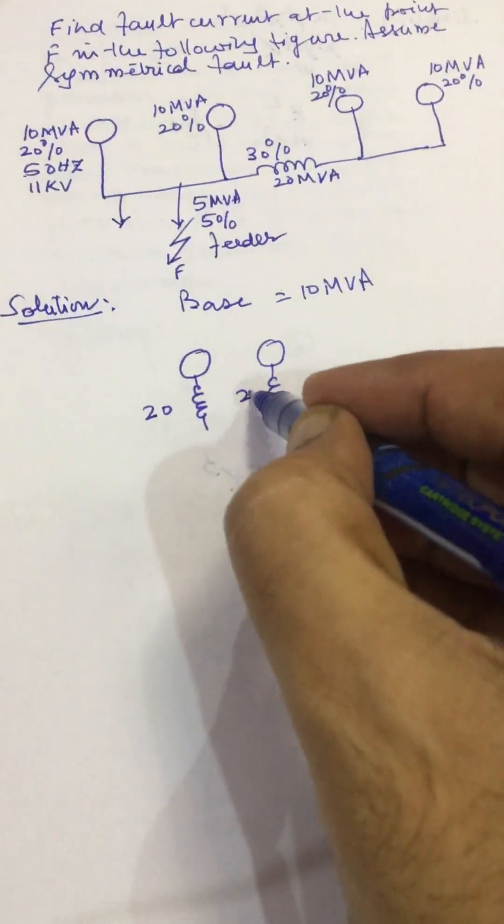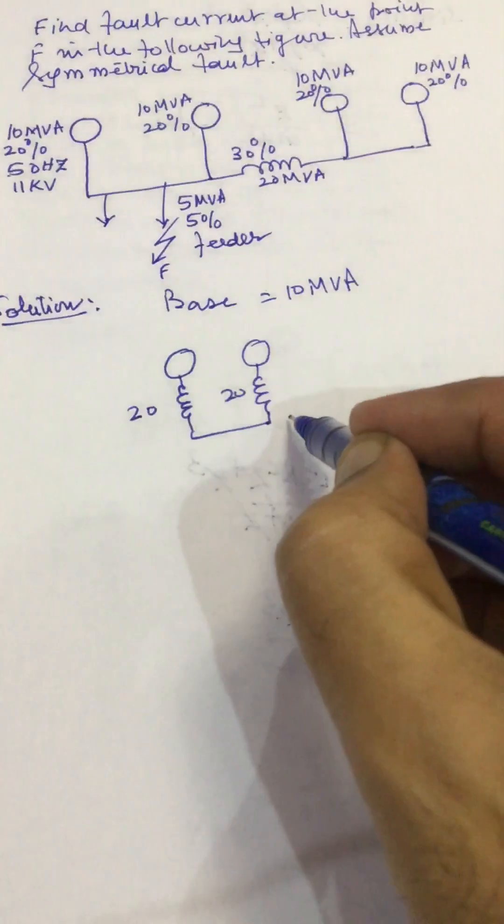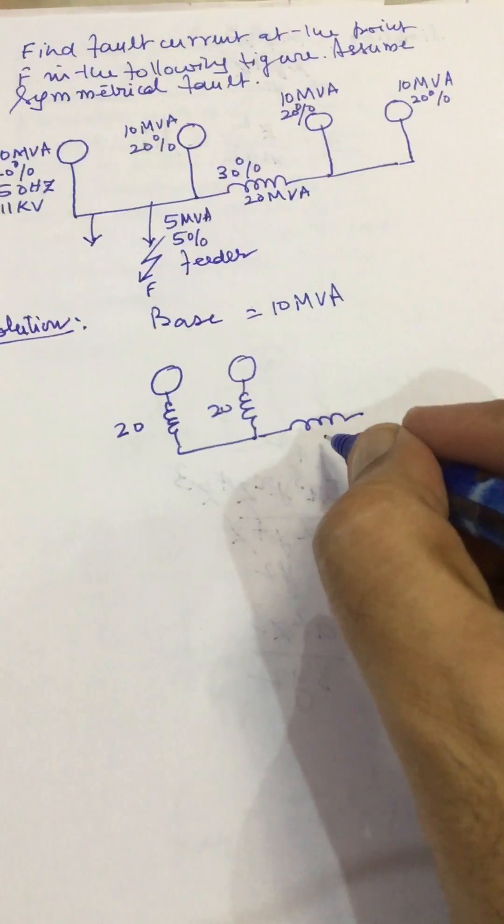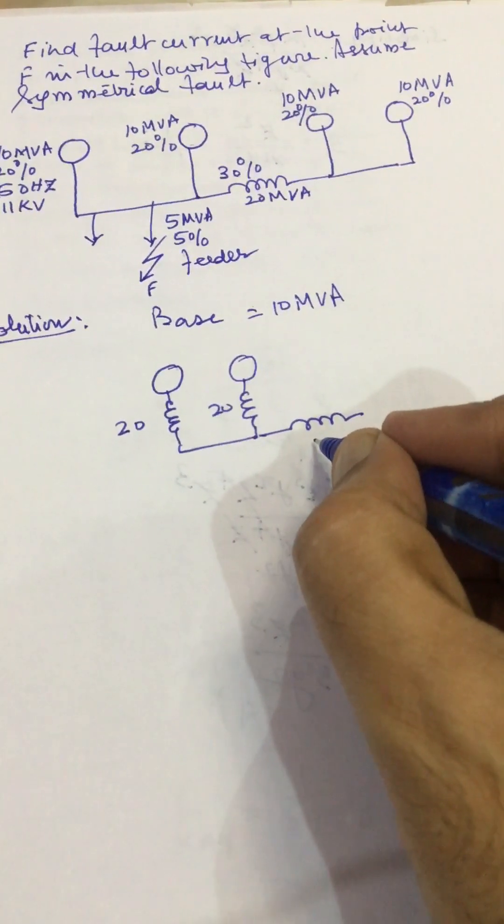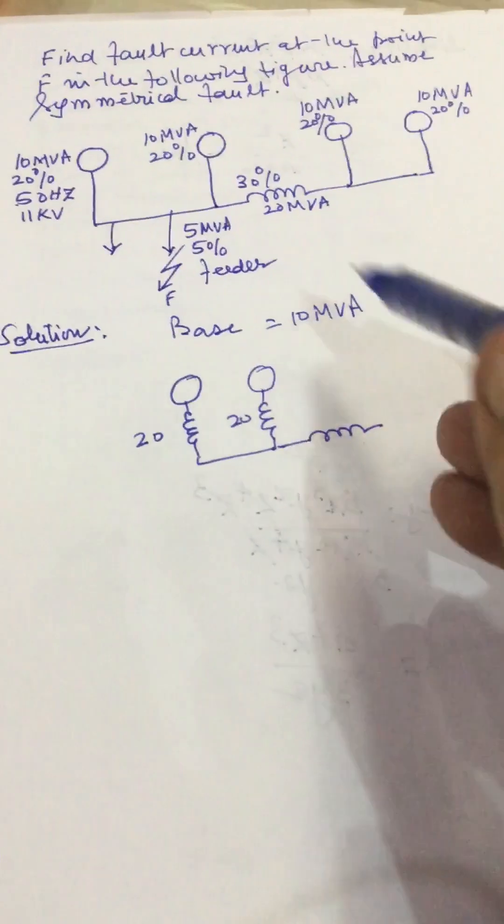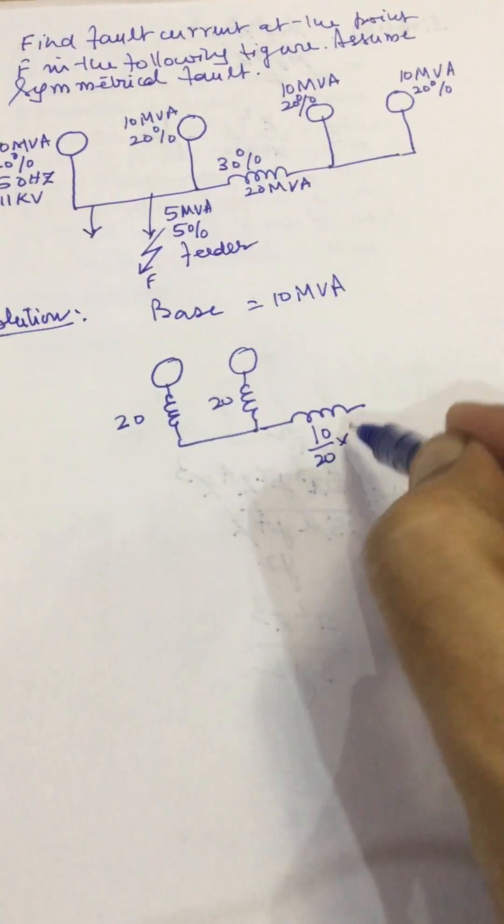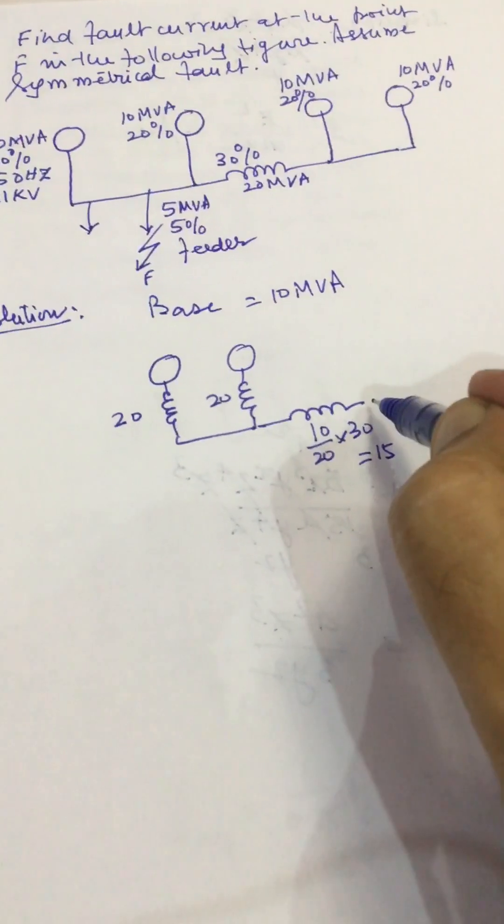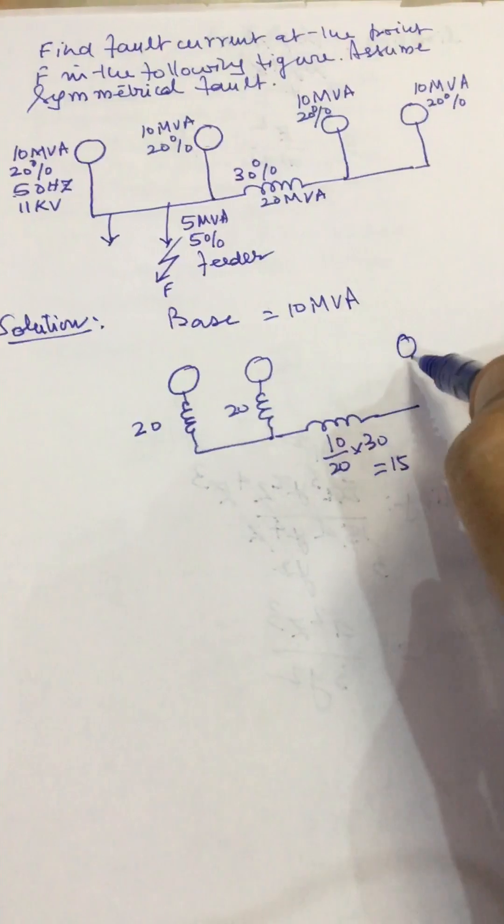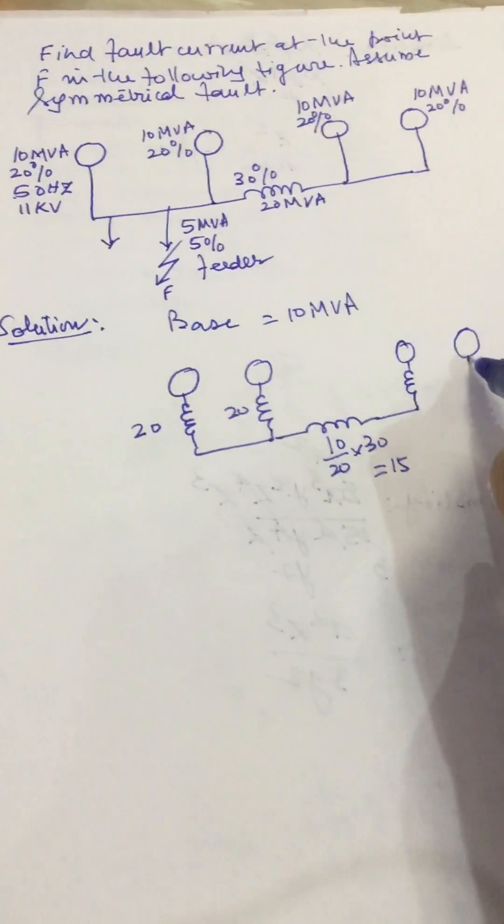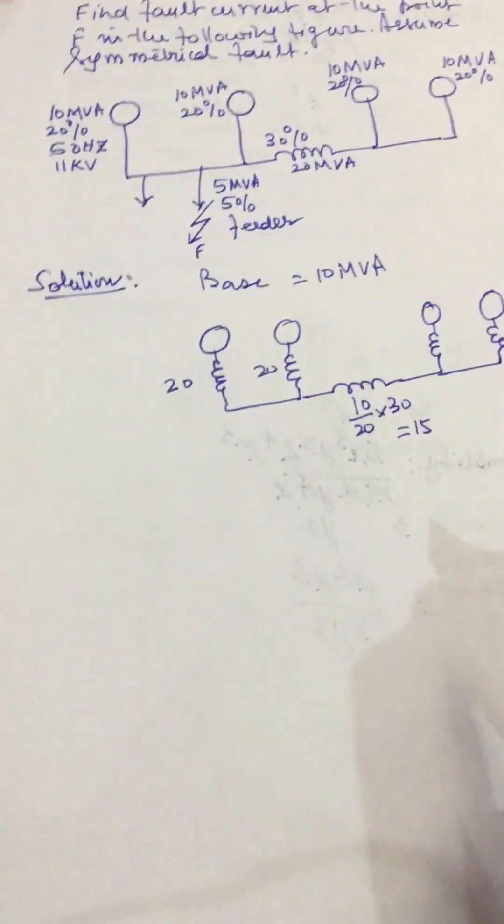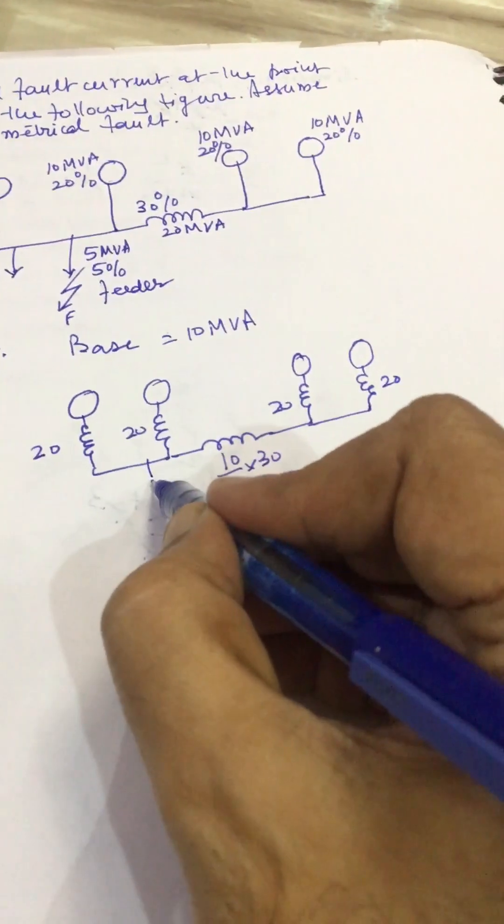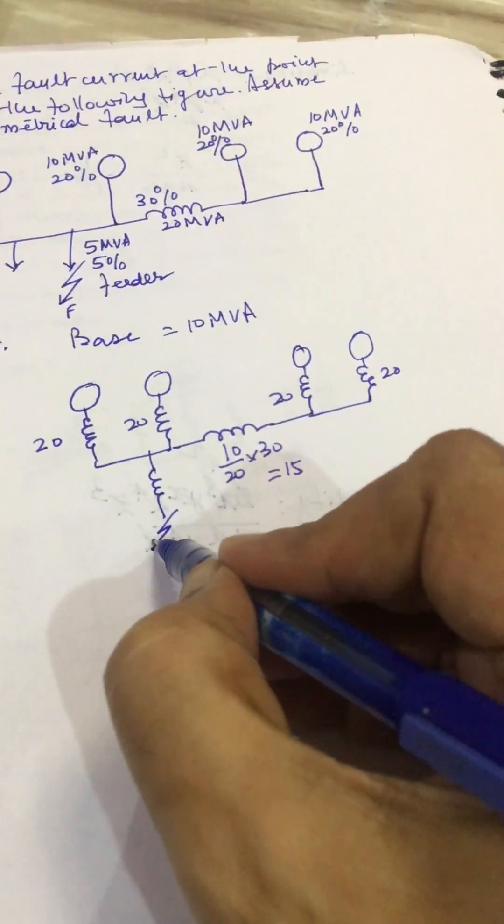This is 20 percent, this is 20 percent and this is 30 percent at 10 MVA. So this will be at 10 MVA, this is 30 percent, so this will be equal to 15 percent and these reactances will remain same, this is 20 percent and this fault takes place at this point.